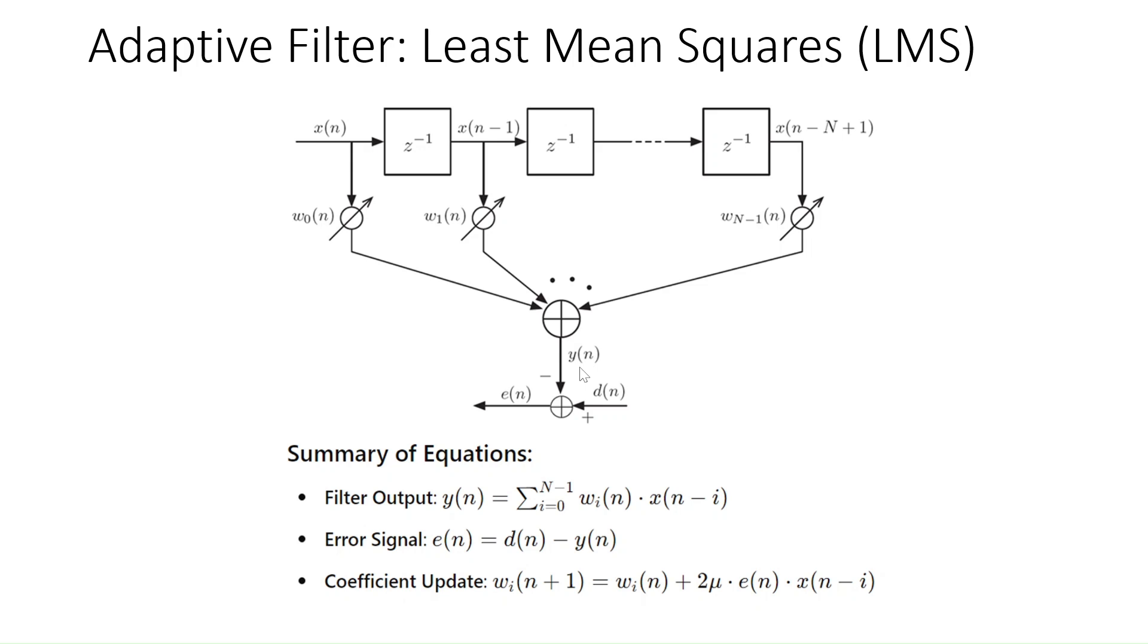YN denotes the output of the filter. This output is compared with the desired signal. We assume that we have a copy of the desired signal and in most cases we do. The error is calculated by subtracting the desired signal from the filter output. This error is then finally used to adapt or change these filter weights and the algorithm